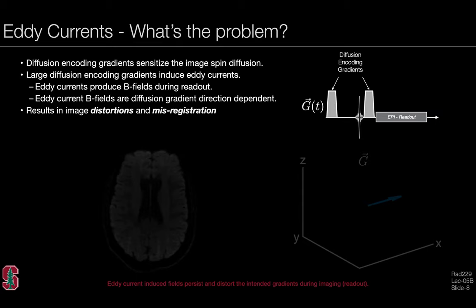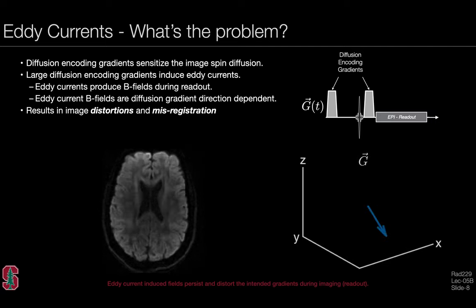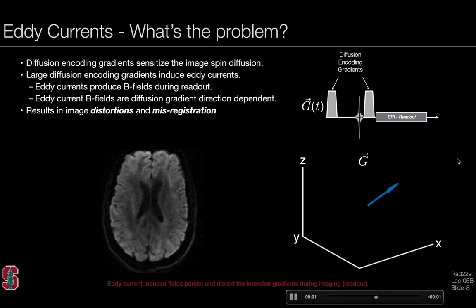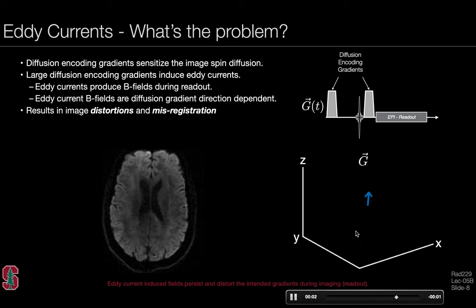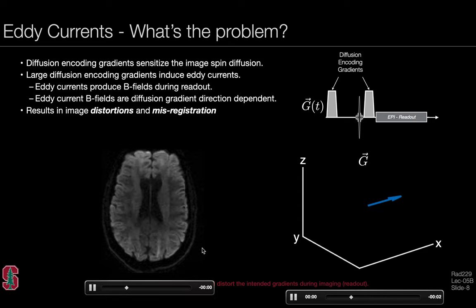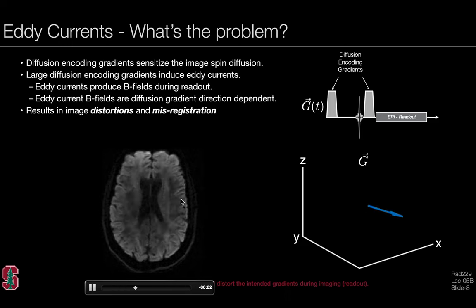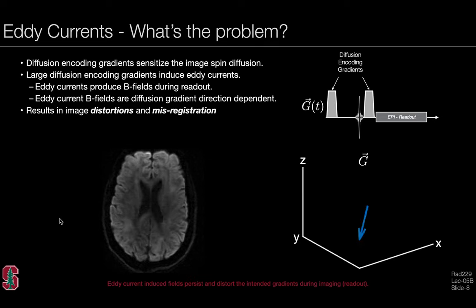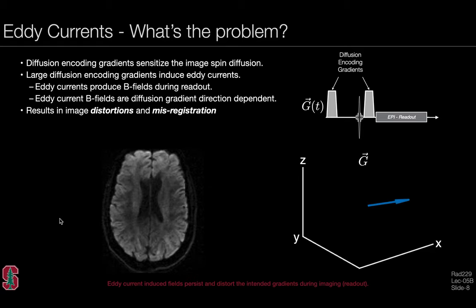When acquiring diffusion images along different gradient directions, the information must be composited into a model of the underlying diffusive process. But if the images are misregistered, this cannot be done correctly. There is a significant amount of distortion and misregistration between images acquired along different diffusion encoding directions, leading to challenges when combining independent images to understand the underlying diffusive process.